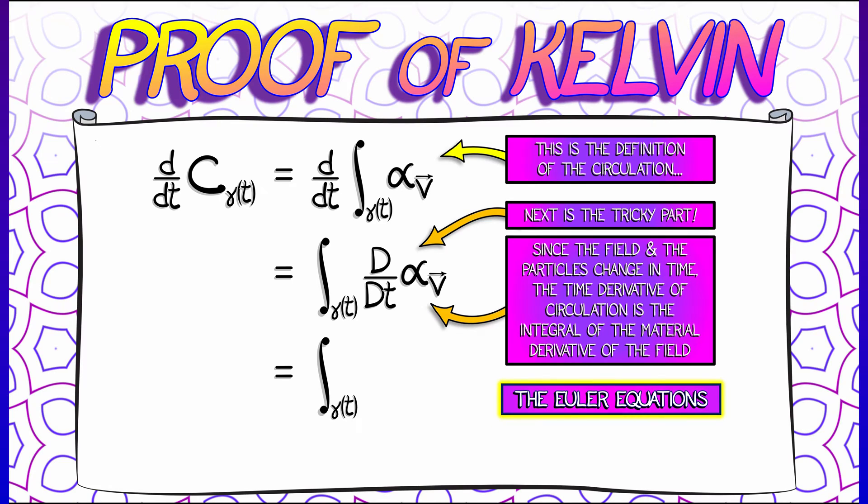Now, what do we do? We use the Euler equations to say that that material derivative is minus dh. It is a gradient one form field, and that is perfect. That's exactly what we need.